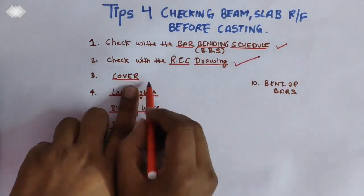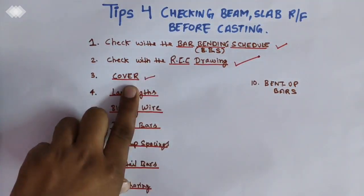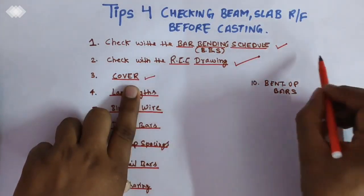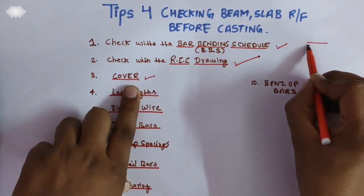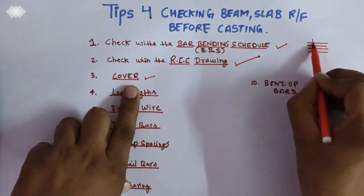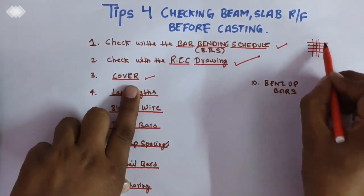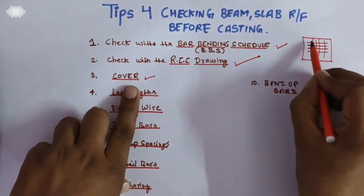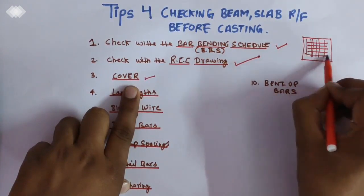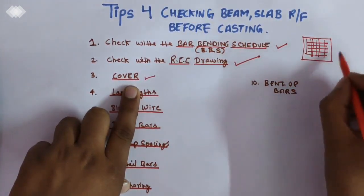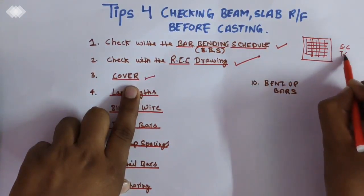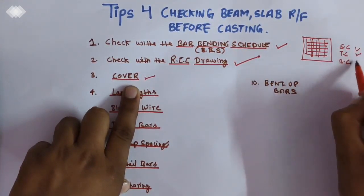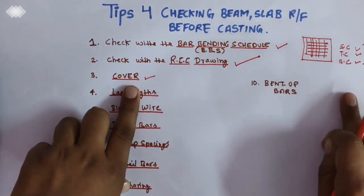The third tip is the cover. You have to focus on the cover — for the reinforcement with main bars and distribution bars in your slab, you have to focus on the side cover, the top cover, and the bottom cover. These little details matter.